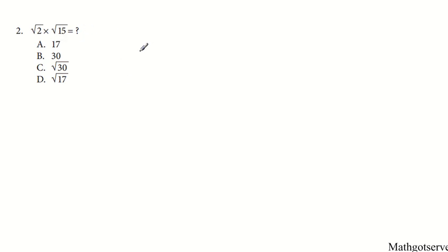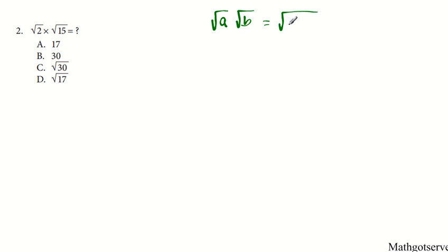Let's move on to question 2. What is the square root of 2 times the square root of 15? This involves the use of a property of radicals known as the product property. So if you have root A times root B — these terms under the square root are known as the radicands — anytime you're multiplying radicals of this nature, all you have to do is multiply the radicands. So it's A times B, which can be written as root AB.